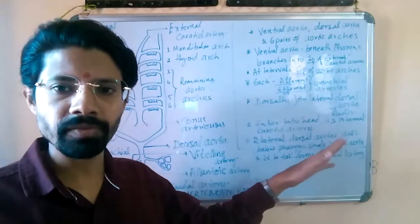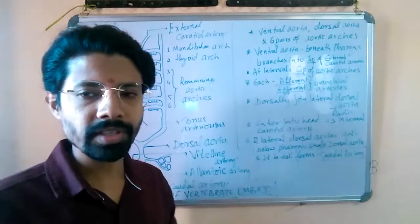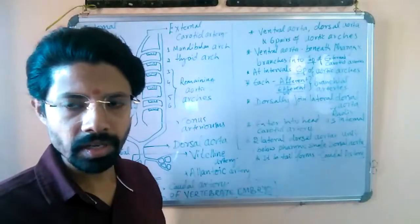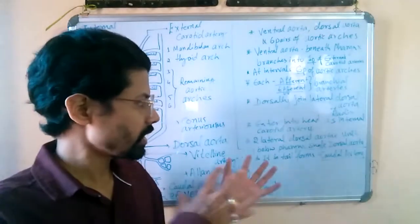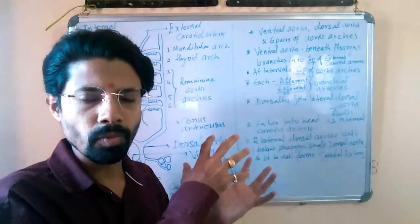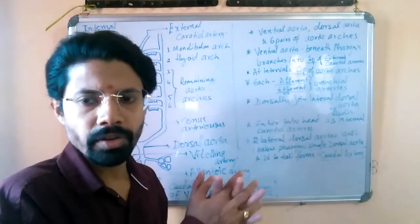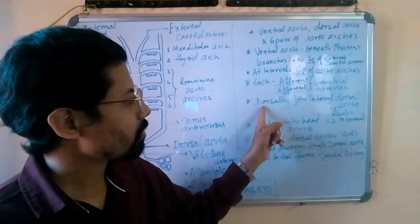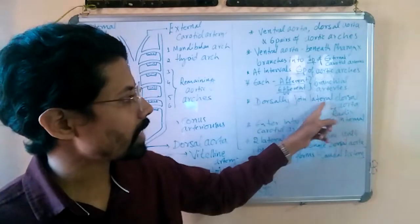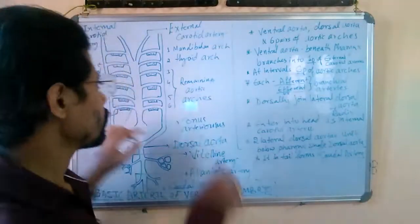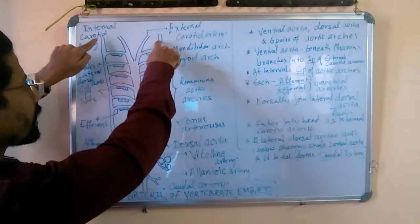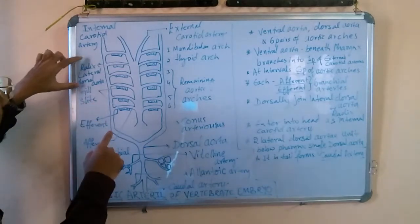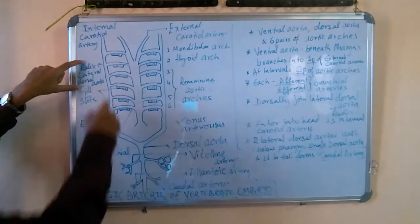In other vertebrates this will somewhat differ, because the developmental process has evolved and there are different types of modifications in aortic arches — that we'll discuss later in the comparative part. Presently we are discussing the basic body plan or basic structure of an aortic arch in vertebrates. These six aortic arches dorsally join to form a lateral dorsal aorta, also called the radix. All six branches attach to the lateral sides of the aorta to form the radix or lateral dorsal aorta.